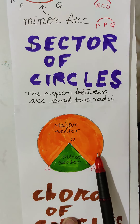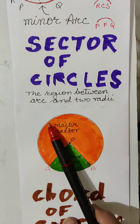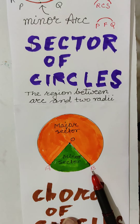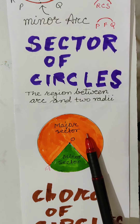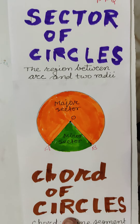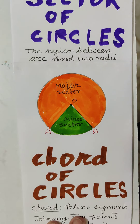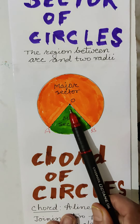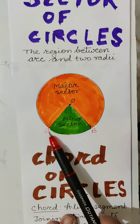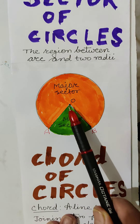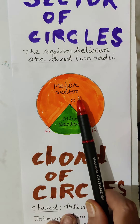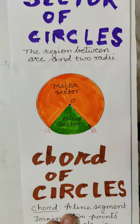Sector of a circle: the region between an arc and two radii is known as the sector of the circle. With radii OA and OB, the saffron region is known as the major sector and the region in green is known as the minor sector. AB is the minor arc, and with two radii OA and OB, OAB is the minor sector.